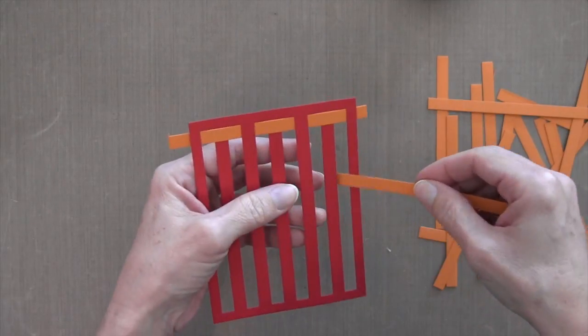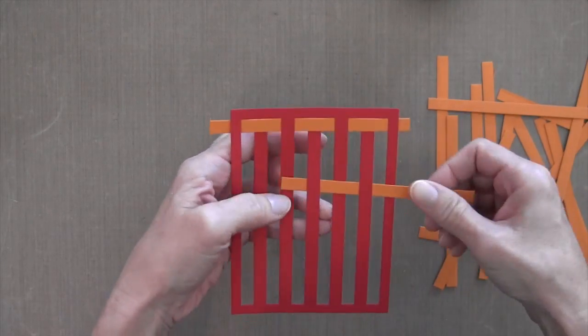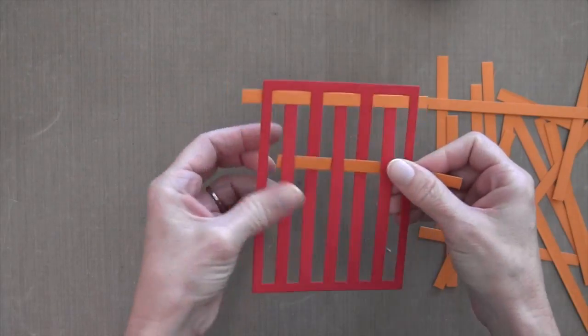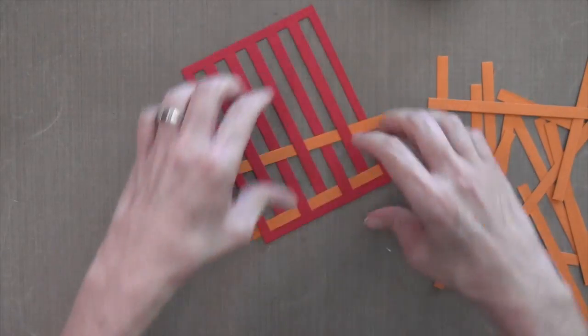And so you'll just weave it in and out and then push it nice and snug to the end. And I found that it was easier to weave it kind of toward the bottom where the pieces were a little bit more bendable, more flexible.